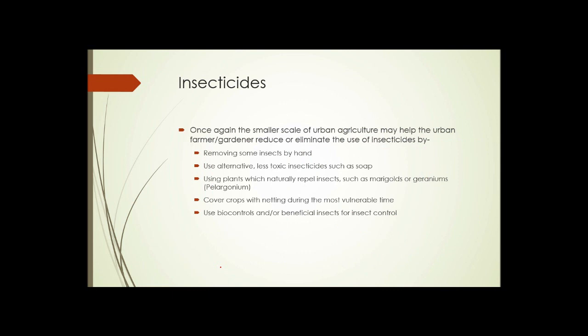Insecticides. Again, the smaller scale of urban agriculture might help the urban farmer or gardener reduce or eliminate the use of insecticides by: one, removing some insects by hand. Things like tomato hornworm are fairly large caterpillars, easy to see. You can walk around and just pick them right off the plants without applying anything. Use alternative, less toxic insecticides, such as soaps.